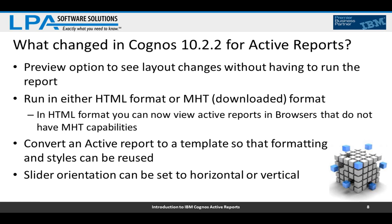Earlier I mentioned MHT files open in IE and Firefox with the UNMHT add-on. But for Chrome or Safari users connected to Cognos, active reports will run in HTML format — so those browsers can now leverage active reports, though they lose the portability of a downloaded file. Active reports can now also be converted to templates, so you can reuse formatting and styles across reports. Slider orientation can now be set to horizontal or vertical.